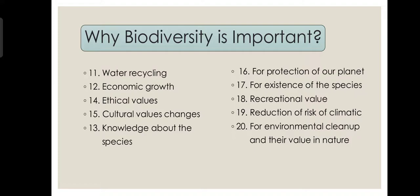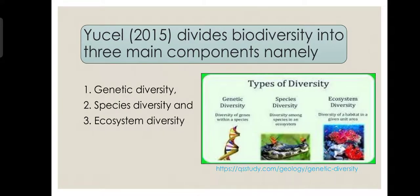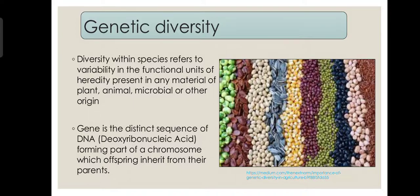It also supports cultural changes, knowledge about species, and much more. In 2015, UCL divided biodiversity into three main components: genetic diversity, species diversity, and ecosystem diversity. First of all, genetic diversity.